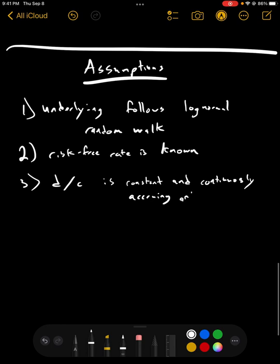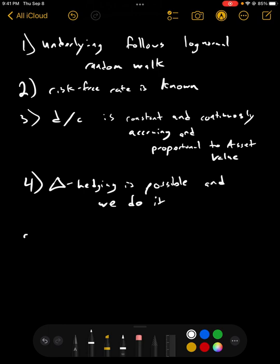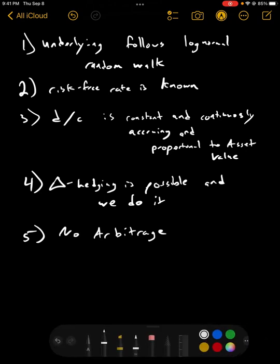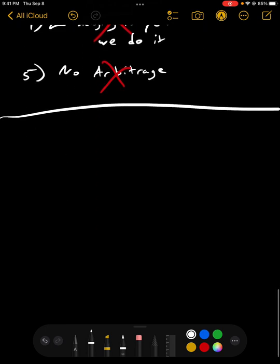And it's proportional to the value, proportional to the asset value. Assumption number four is that delta hedging is possible and we do it. And assumption number five is that there is no arbitrage. And, like we ran into before, every single one of these is absolutely nonsense. But, you know, what can we do?